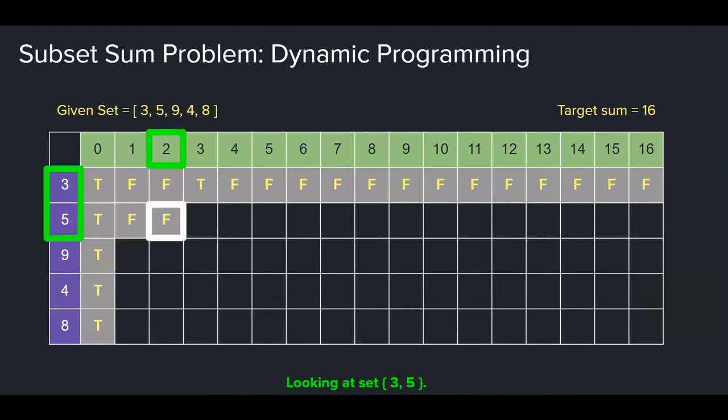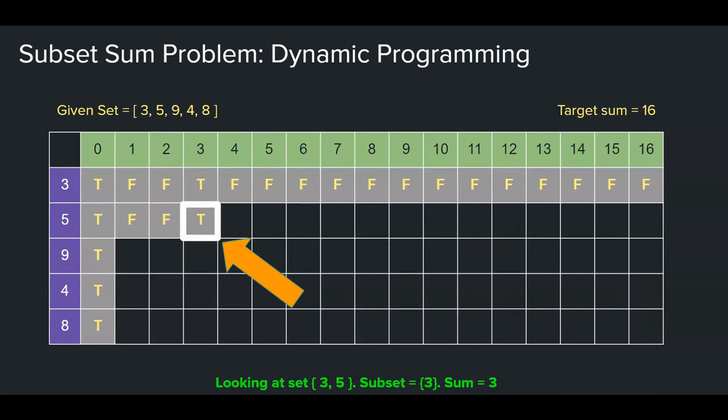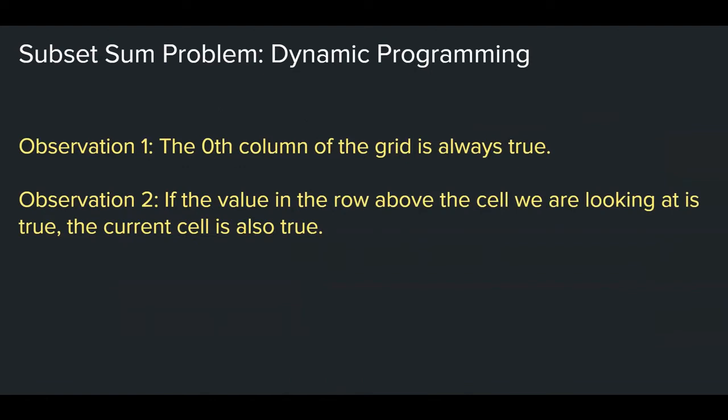We already did this, so let's skip it. No subset in 3 and 5 will add up to 2, so false. There is a subset in 3 and 5 that will add up to 3, so true. But wait, notice something here. If a grid that we're trying to fill out is this, and the cell at the top is true, then doesn't it always mean that this grid is true? Because if you think about it, this is a subset of this. So one of the subsets of 3 and 5 is 3. That means that if the upper grid is true, then the bottom grid should also be true, because you could always exclude the element in the bottom number. That leads us to our second observation. If the value in the row above the cell we're looking at is true, then the current cell is always true.